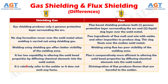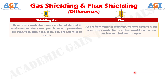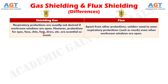Number 5: Gas shielding is relatively safer to the welder as it does not emit any fume, whereas disintegration of flux produces fumes that are harmful to the welder. Number 6: In gas shielding, respiratory protections are usually not desired if workroom windows are open. However, protections for eyes, face, skin, feet, dress, etc.